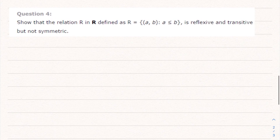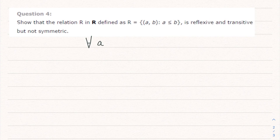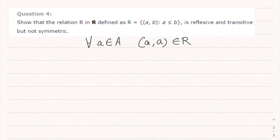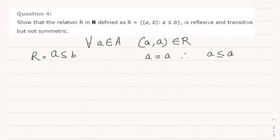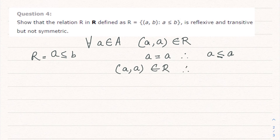Question number 4: Show that the relation R defined as R = {(a, b) such that a ≤ b} is reflexive and transitive but not symmetric. Checking reflexive: for every 'a' belonging to the set, (a, a) must belong to R. Since a = a, we have a ≤ a always. Therefore (a, a) belongs to R, and the relation is reflexive.